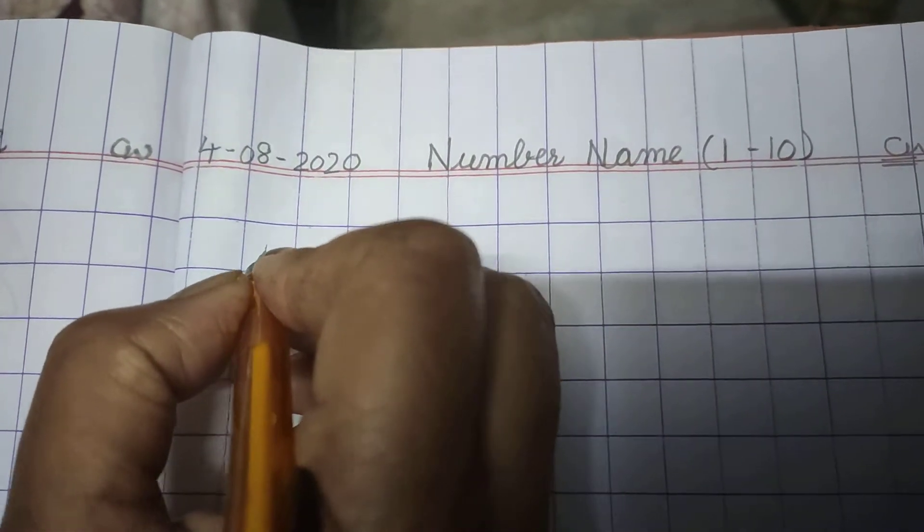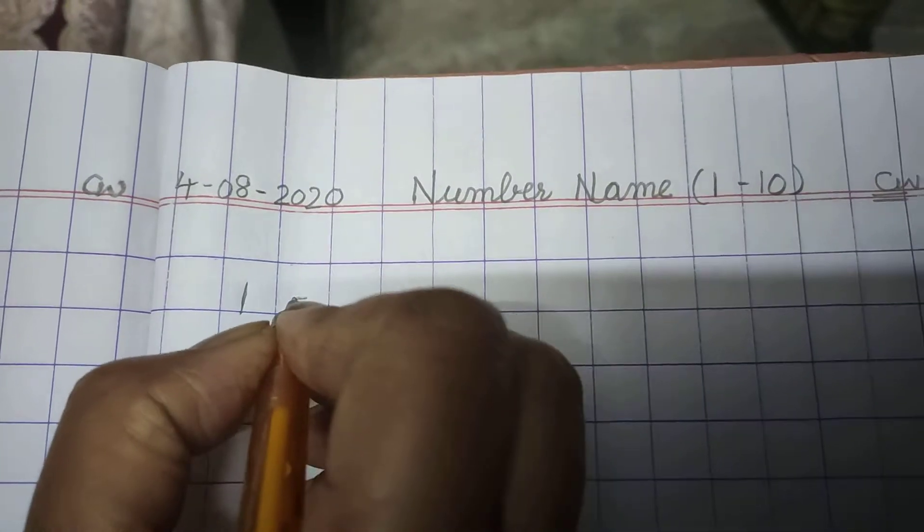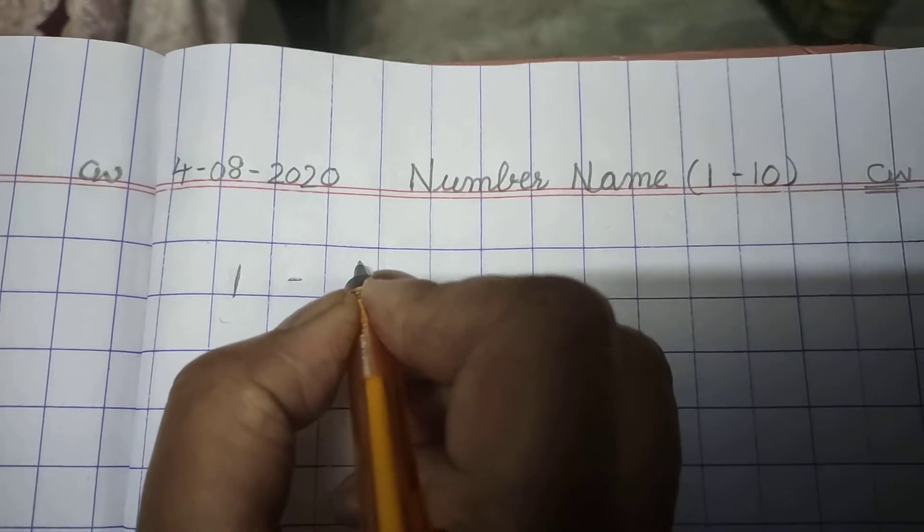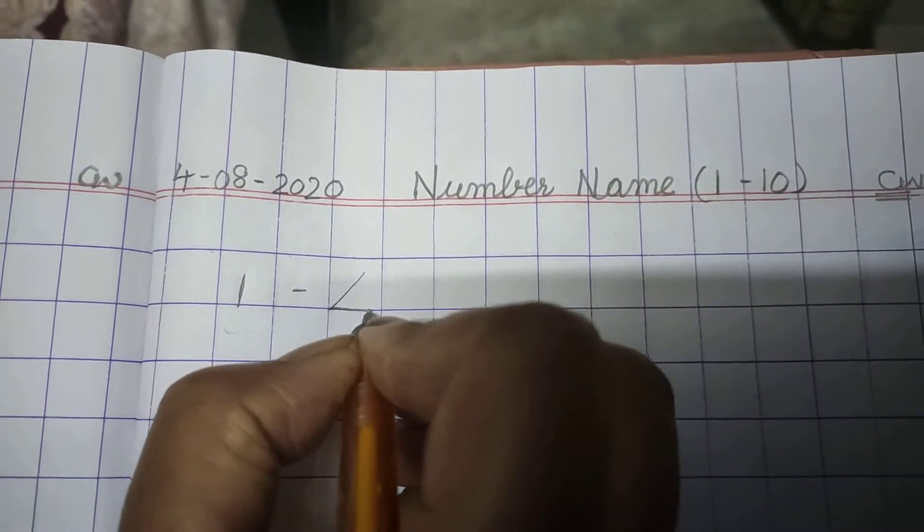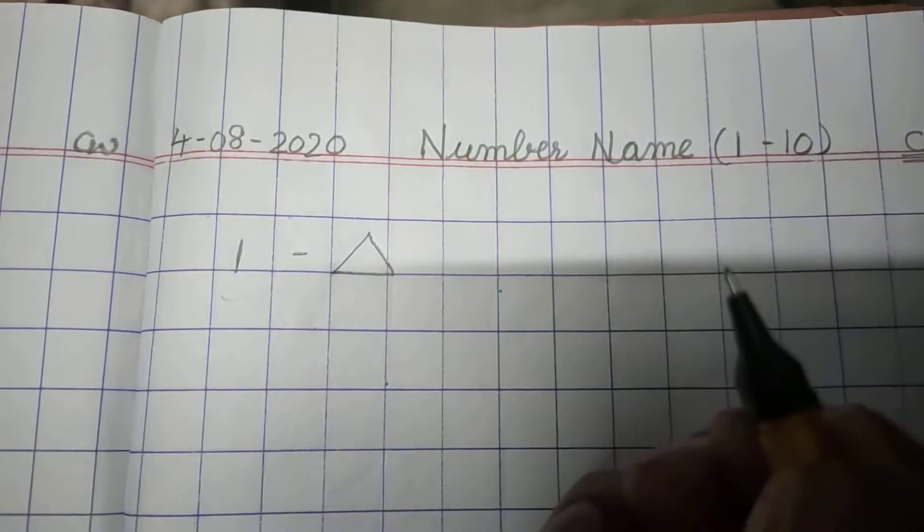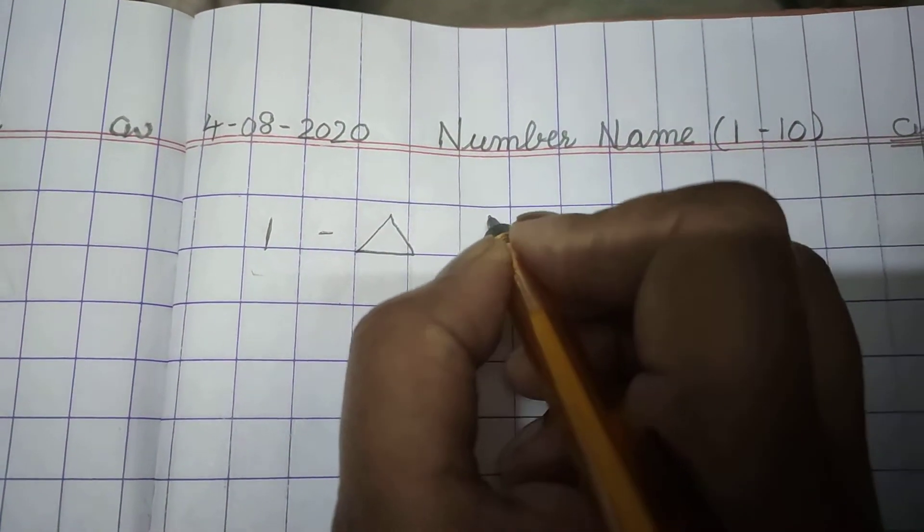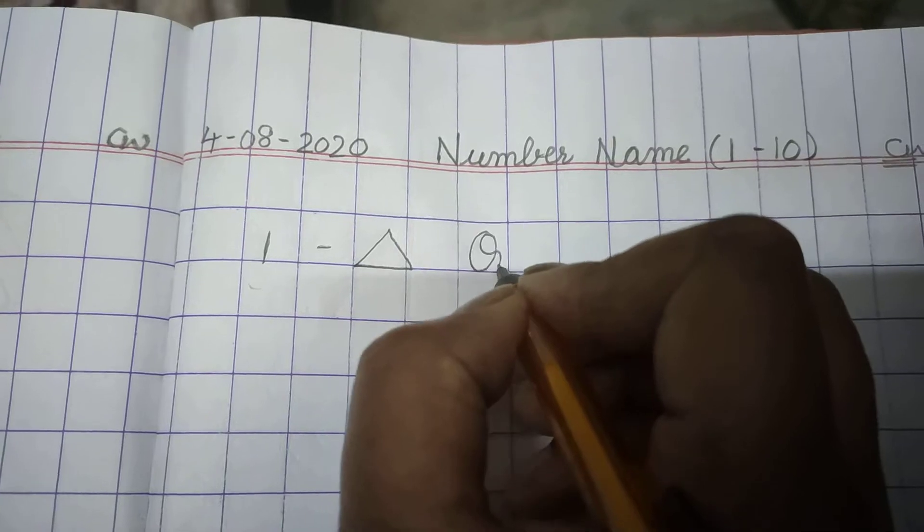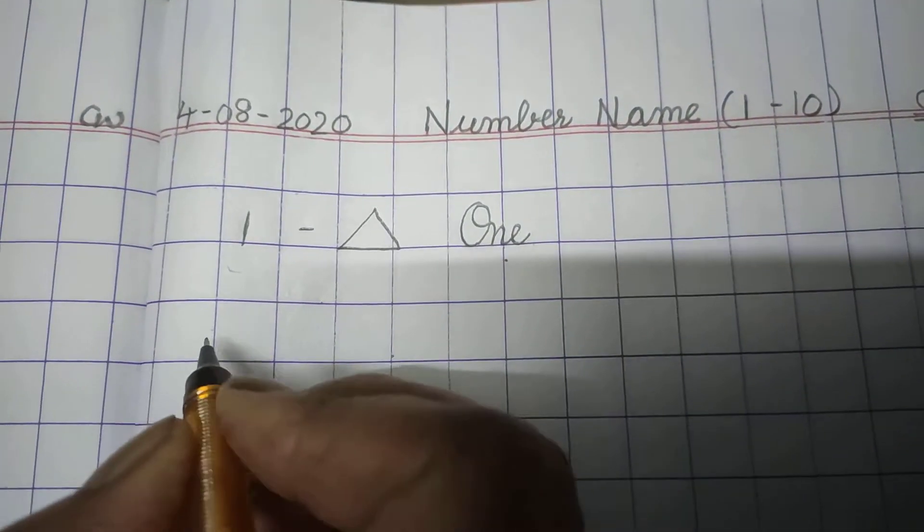Come on, start. 1 and 1 triangle. We should make 1 triangle. 1. And now O-N-E, 1. Beautifully like this.